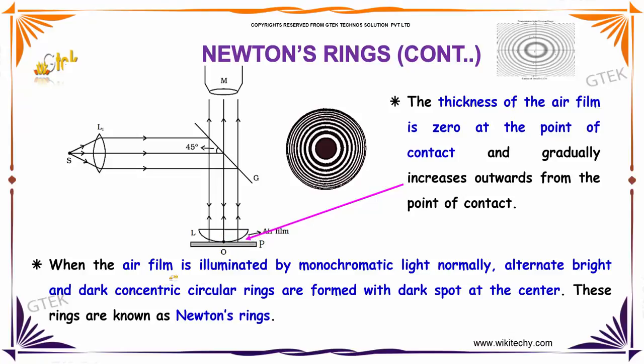When the air film is illuminated by monochromatic light normally, alternate bright and dark circular rings are formed with a dark spot at the center. These rings are known as Newton's rings. You are able to see the Newton's ring here.